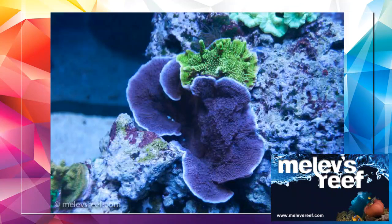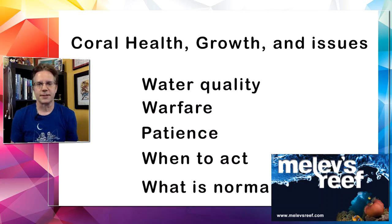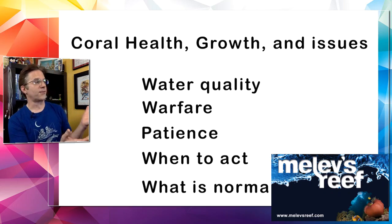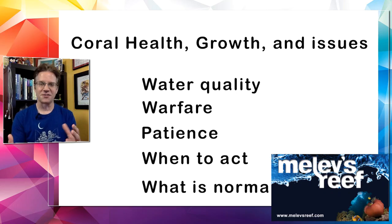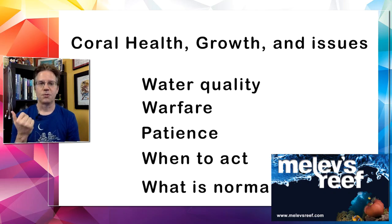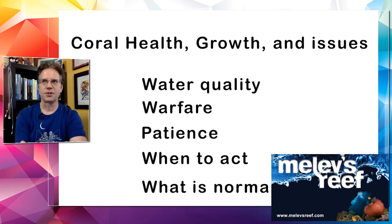Here are a couple of Montiporas growing inside my 280-gallon system. This is actually an older picture before the purple grape Monti became a ginormous coral. You can see it's a small little guy, maybe two or three inches, and it's budding against another Montipora. The problem with two corals touching is oftentimes they will fight. But we're going to get into how they can live together without damage, as well as when you need to interact and solve it. We want to have healthy corals, good growth, and avoid all the issues.